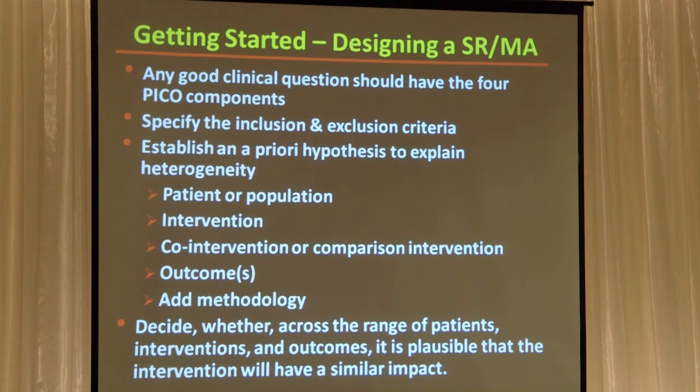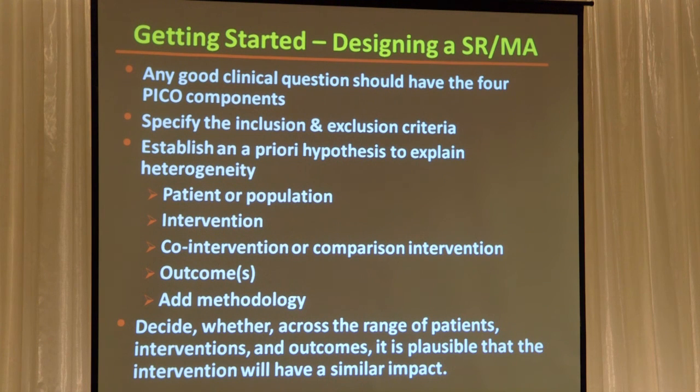So how do we actually do these? We get started the way we get started with any of these projects — by asking a really focused question using the PICO format. Remember, we're thinking about meta-analyses as clinical trials with our patients as the articles we're putting in. So you have to have pre-established inclusion and exclusion criteria, the same way you would for patients. Why not just see what you get and then pick the articles? Because bias is a risk at every step — and this is a huge potential for bias.